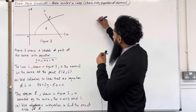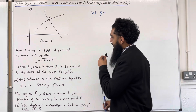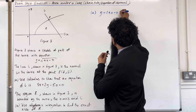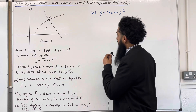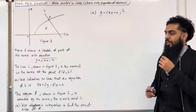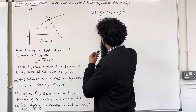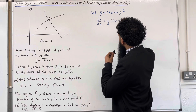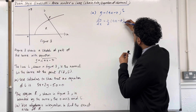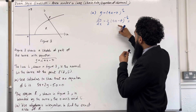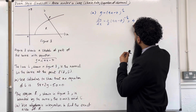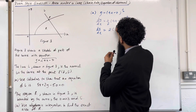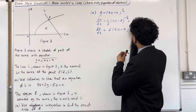Let's look at the solution to part A. The equation of the curve is y equals square root of 4x minus 7, which can be written as (4x minus 7) to the power of 1 half. The first step is to find the gradient function dy over dx using the chain rule: bring down the power, subtract 1 from the power to get minus 1 half, and multiply by the derivative of the bracket, which is 4. Simplifying gives dy over dx equals 2 times (4x minus 7) to the power of minus 1 half.